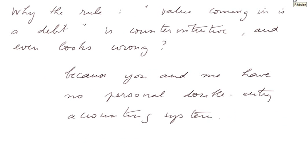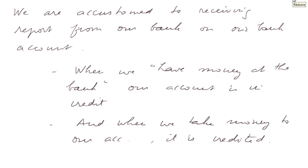Why the rule 'value coming in is a debit' is counterintuitive and even looks wrong — well, that has to do with the bank, because you and I have no personal double-entry accounting system. We are accustomed to receiving reports from our bank on our bank account. When we have money at the bank, our account is in credit, and when we add money to our account at the bank, it is credited.